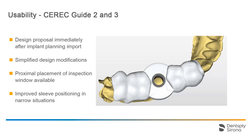Next, we will briefly look at the latest features regarding the CEREC Guide 2 and 3 design. CEREC Software 5.2 provides a guide design proposal immediately after importing the implant planning data into the CEREC software. Given that sufficient dental structure was scanned, two distal and mesial adjacent teeth will be included.